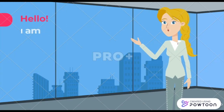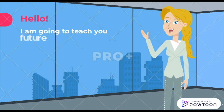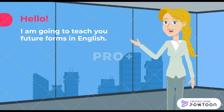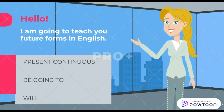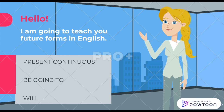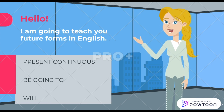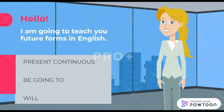Hi, welcome to DB Online English. In today's lesson, I'm going to teach you a number of future forms in English. Several structures are used to express future, such as present continuous, going to, and will. Before getting into details, let's study some example sentences.